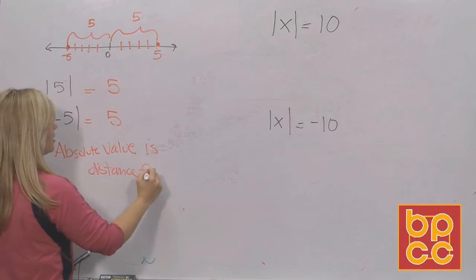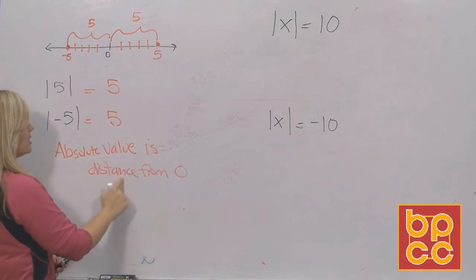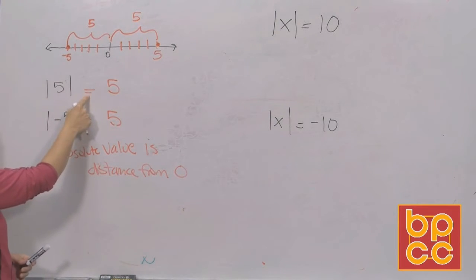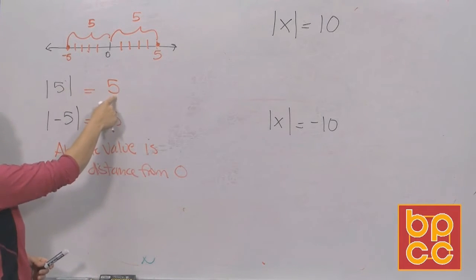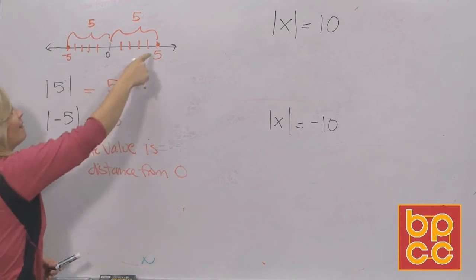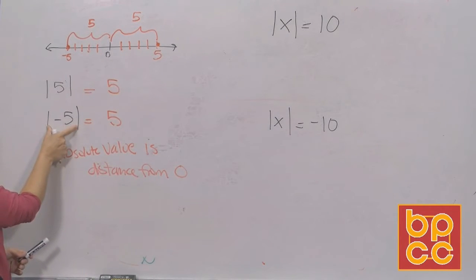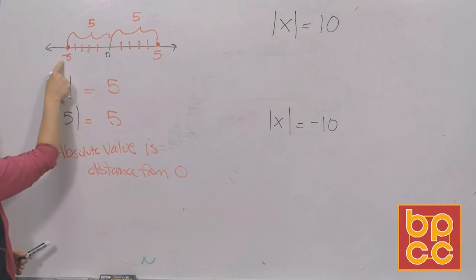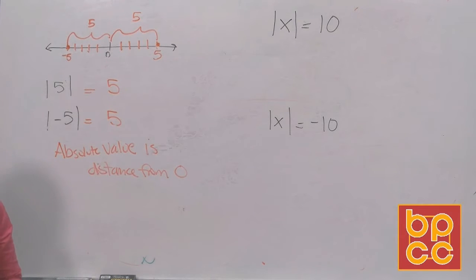Absolute value is distance from zero. That's your definition. When you see absolute value of five equals five, this five represents how far I am from zero. If I'm at five, I'm five from zero. If I'm at negative five, I'm also five from zero. That's what absolute value represents — a distance from zero.